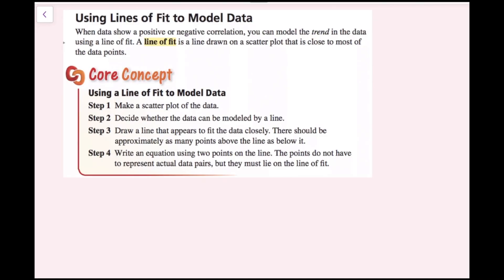To make a line of fit to model data: Step 1, make a scatterplot of the data. Step 2, decide whether the data can be modeled by a line. Step 3, draw a line that appears to fit the data closely. There should be approximately as many points above the line as below it. Step 4, write an equation using two points on the line. The points do not have to represent actual data pairs, but they must lie on the line of fit.